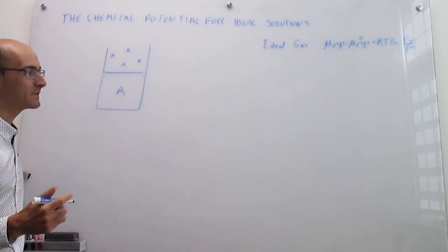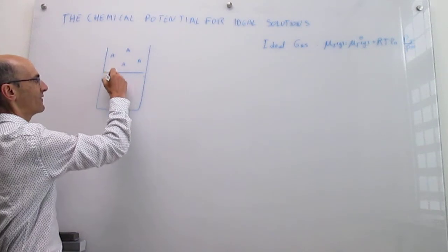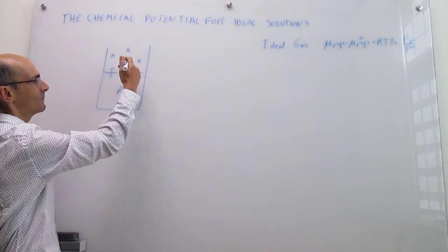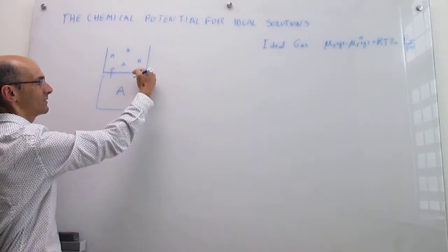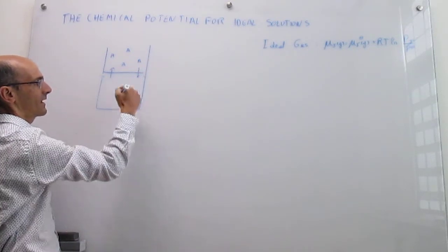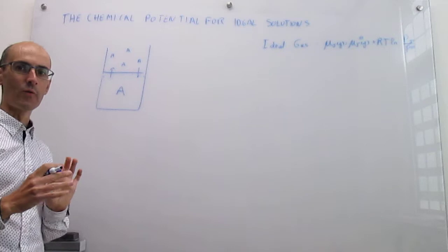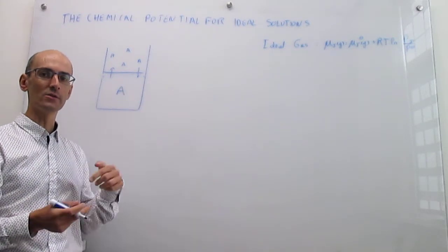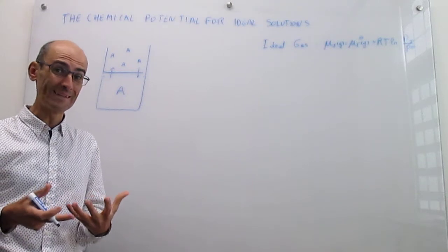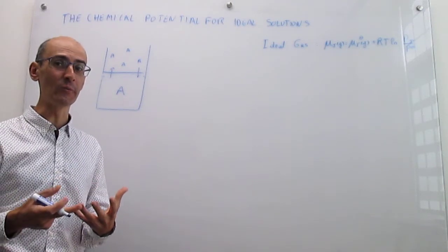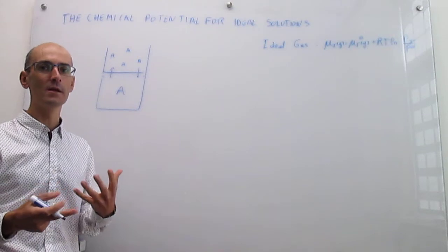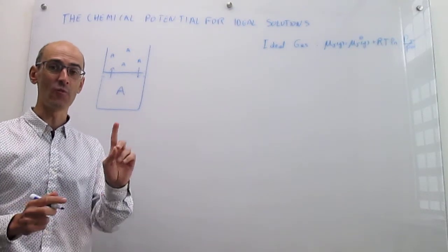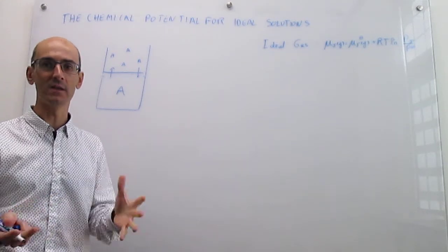At equilibrium, A is vaporizing from the liquid into the gas, but at the same time, a little bit of gas is condensing from the gas into the liquid. The rates for vaporization and condensation are the same. If you're at equilibrium — and that is very important, you have to be at equilibrium — then the amounts of liquid and gas don't change, because the rates of vaporization and condensation are identical.